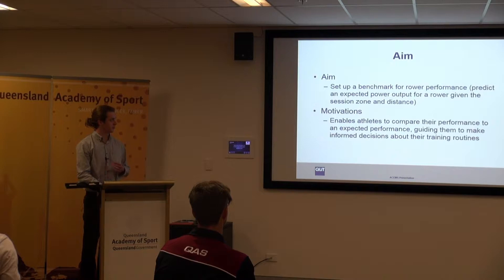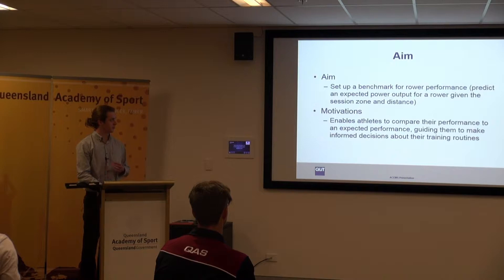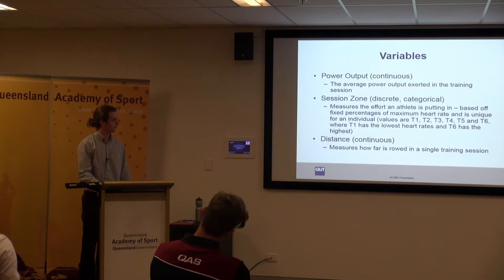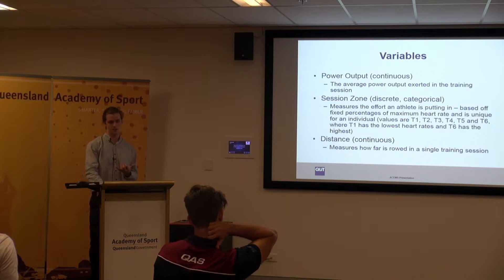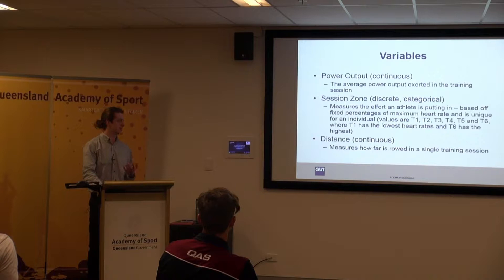The benchmark would predict an expected power output for a rower given the session zone and distance. The variables considered were power output — a continuous variable representing average power over the training session — and session zone, a measure of effort based on a fixed percentage of maximum heart rate. Session zone takes values T1 to T6, where T1 corresponds to lower heart rates and T6 is the highest.